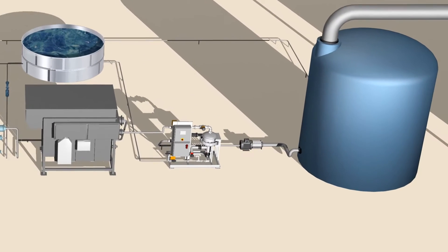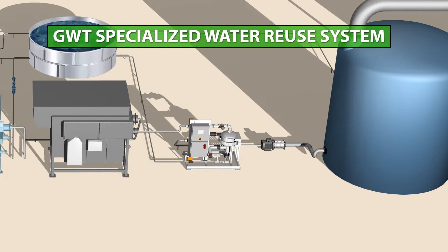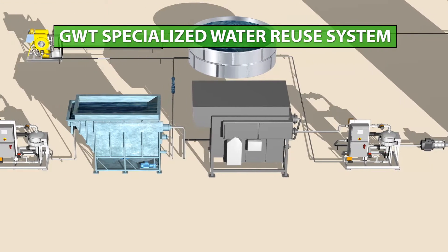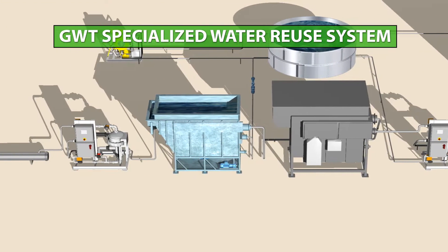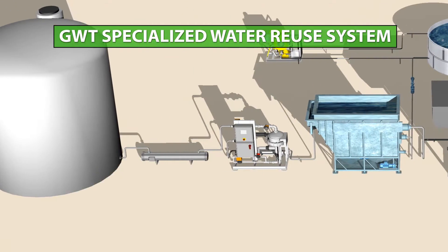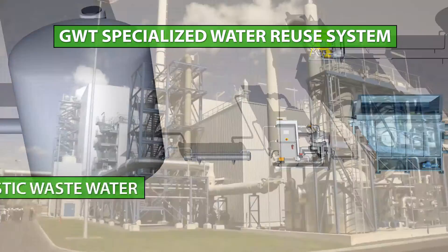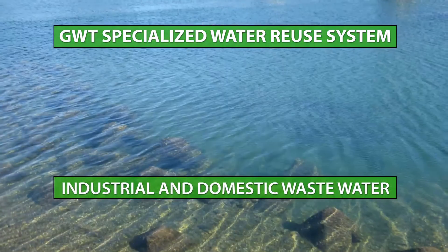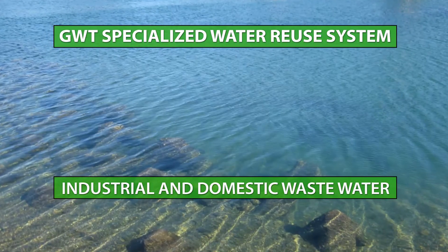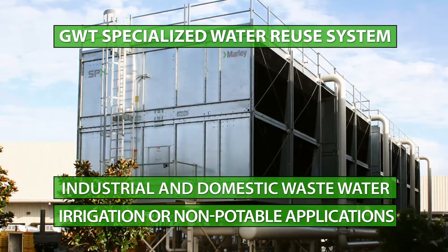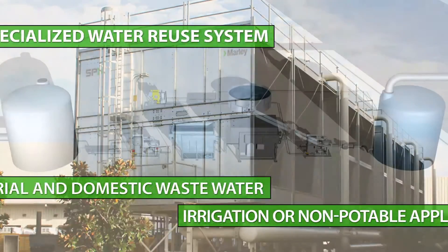the utilization of the GWT Specialized Water Reuse System. These water reuse systems are designed to sustainably treat industrial and domestic wastewater to be used for irrigation and other non-potable process applications.